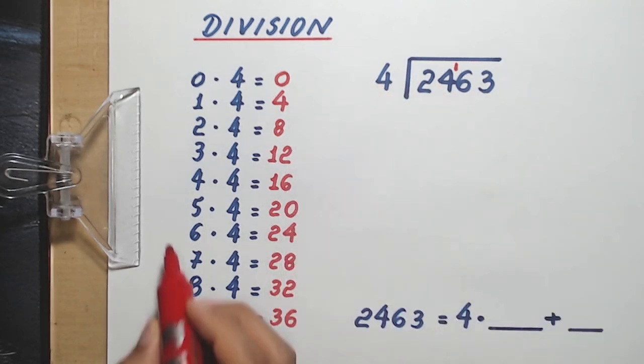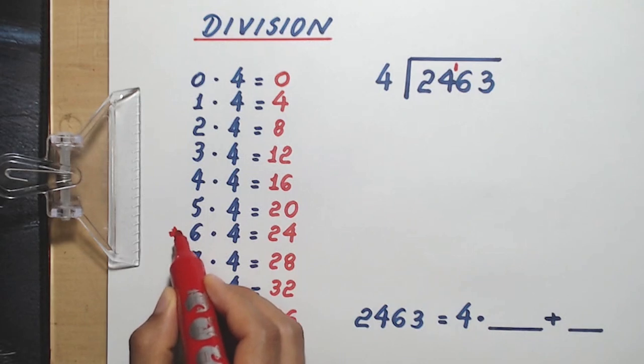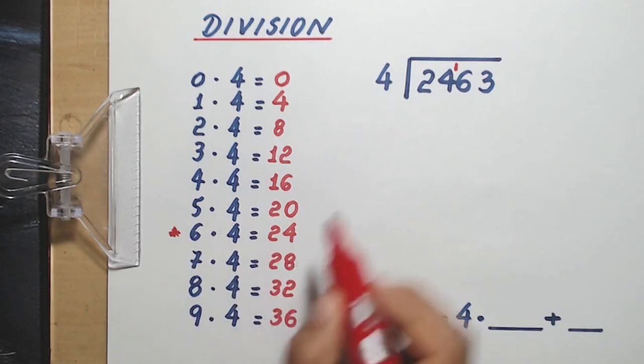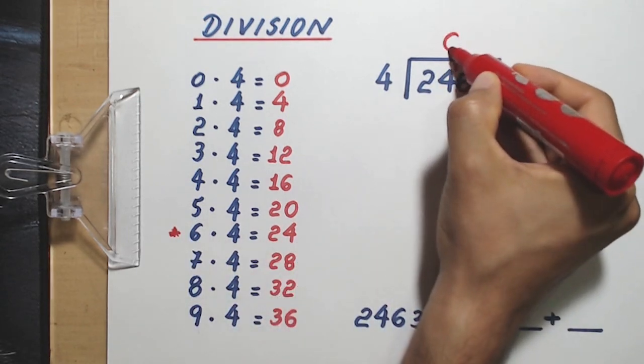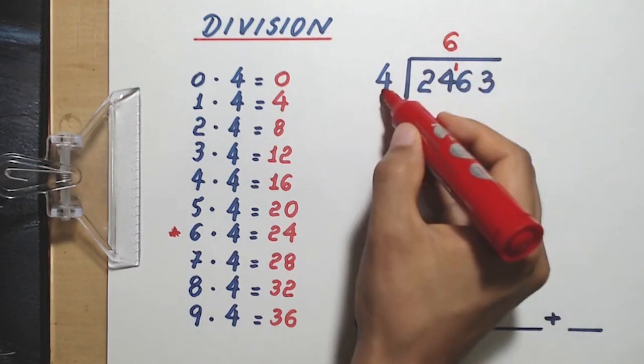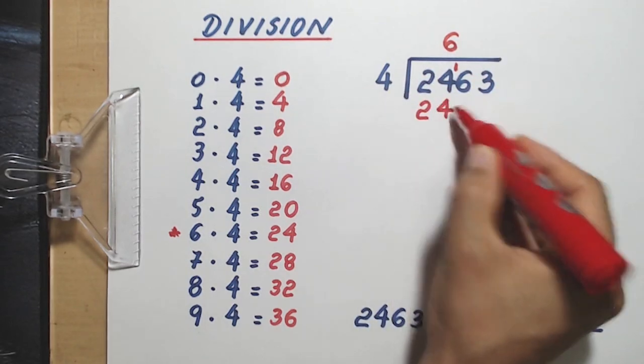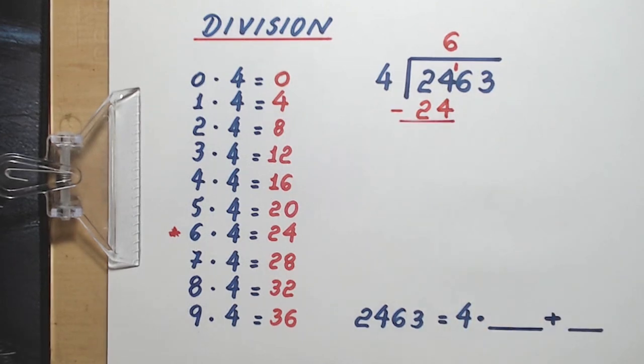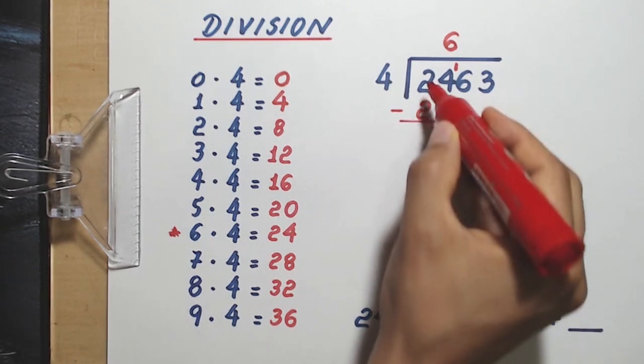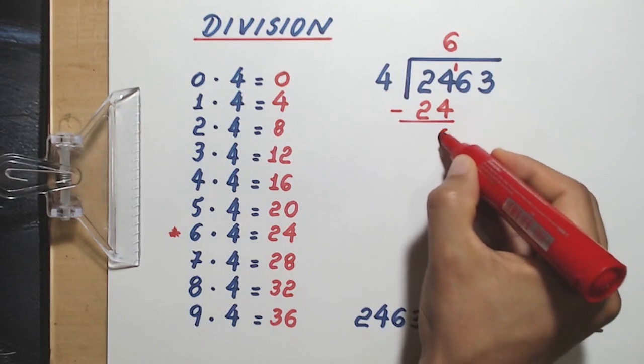If you take a look, you will say that 6 times 4 is exactly 24, so 6 is the number we were looking for. 6 times 4 is 24, I write it here, and then we subtract. This is pretty easy, because 24 minus 24 equals 0.